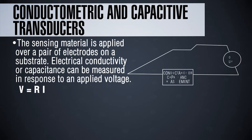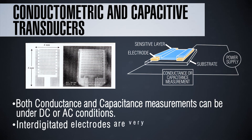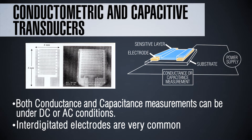The first type of sensor is the conductometric or capacitive sensor. Here you apply the sensing material over a pair of electrodes on a substrate and measure the electrical conductivity or capacitance in response to an applied voltage. Conductivity is governed by Ohm's law — voltage divided by current gives resistance — or charge divided by voltage gives capacitance. You can measure both conductance and capacitance under DC or AC conditions. Electrodes can be simple or interdigitated to increase surface area, and then the material is deposited on the electrode.